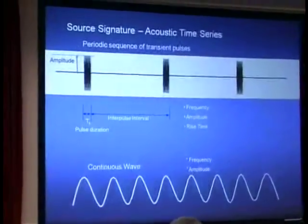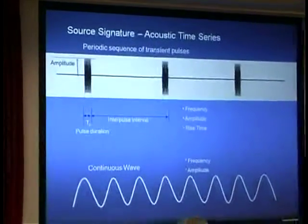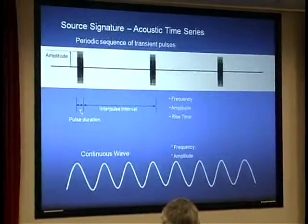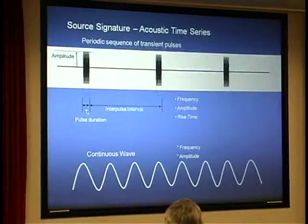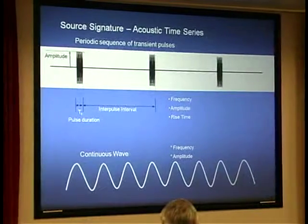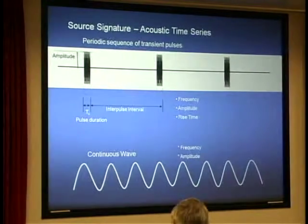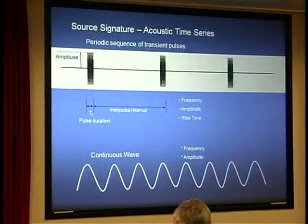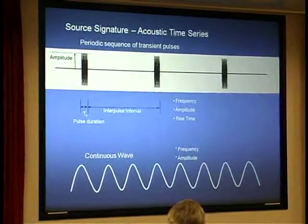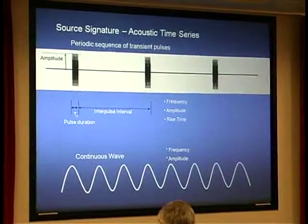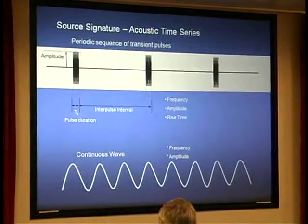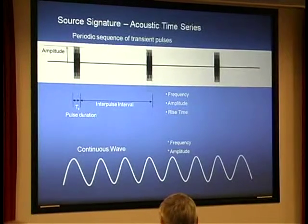Things get more complicated because sounds are not all the same in how they're presented over time. A CW (continuous wave) sound started in the infinite past and goes into the infinite future, never changing. It has only two parameters: frequency (the pitch — like which note on a piano) and amplitude (how we perceive the intensity or loudness of the sound).